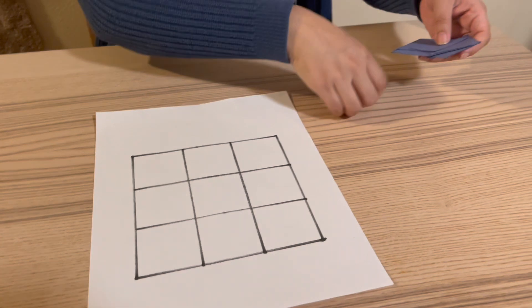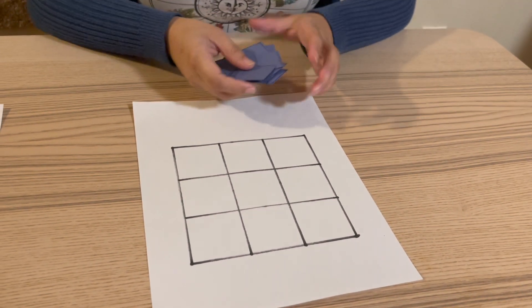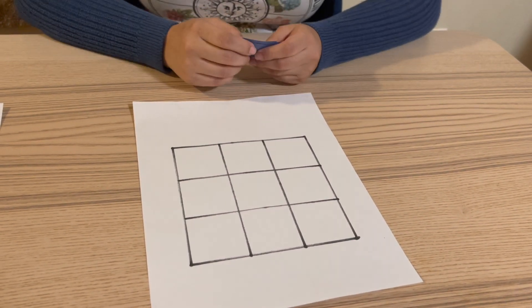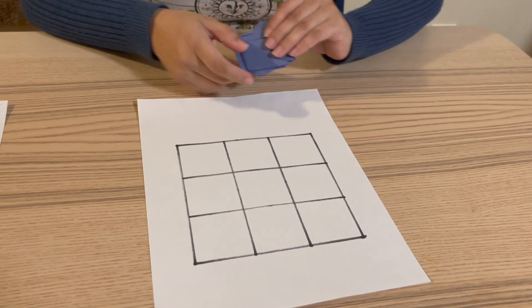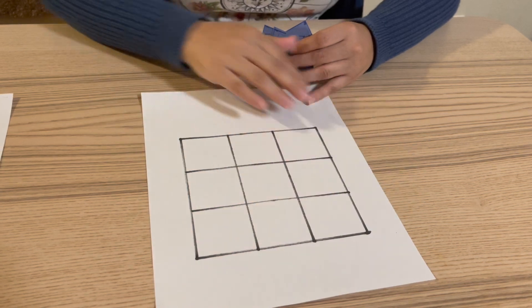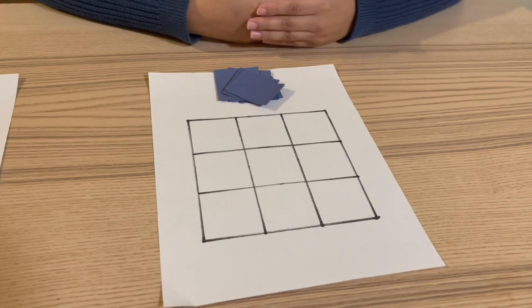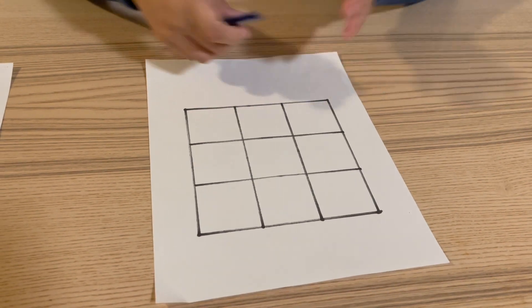Now that we practiced with the first shape, we can move on to the second shape, which is a square. Grab the blue square puzzle pieces and ask the student, how many blue squares do you think it's gonna take to cover our big square? Well, let's find out.